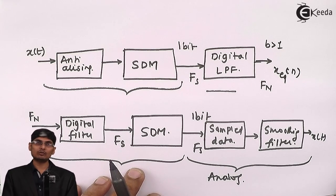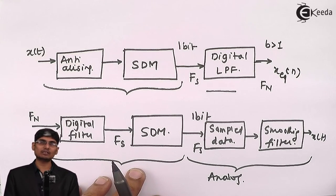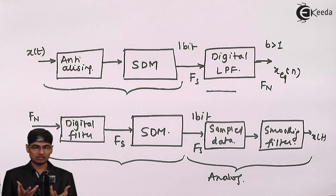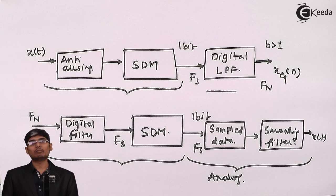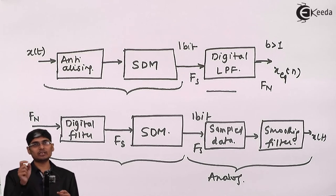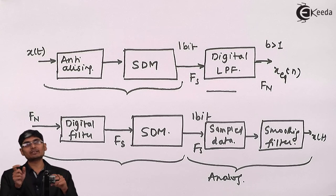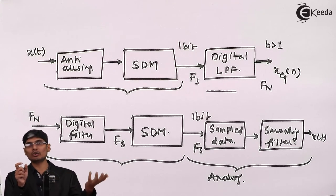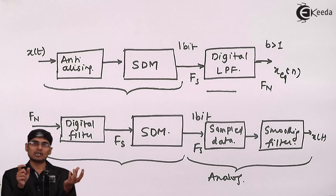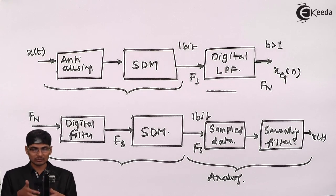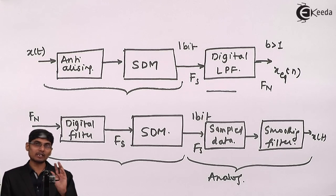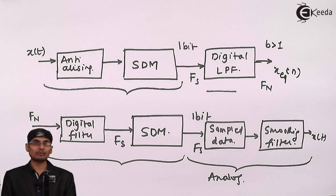So this is how a basic block diagram of an oversampling A to D converter looks like. Whenever they ask you for an oversampling A to D converter, you have to consider why it is needed, how it benefits by showing that the difference variance goes low, that you can represent with fewer bits using low resolution quantizers, and then show this block diagram. I hope you have understood what is meant by an oversampling A to D converter. Thank you.